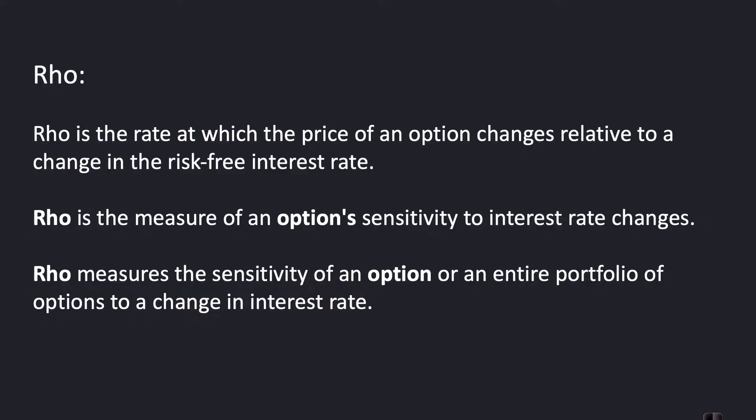I'm going to repeat this definition a few times to help make sure we understand it. Rho is the rate at which the price of an option changes relative to a change in the risk-free interest rate. Rho is the measure of an option's sensitivity to interest rate changes.